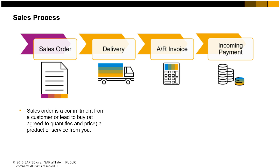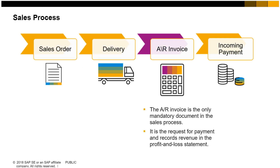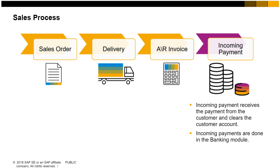The sales order is a commitment from a customer or lead to buy at agreed-to quantities and price, a product or service from you. The delivery indicates that the shipment of goods has occurred. The AR invoice is the only document that must be created in the sales process — it is the request for payment and records the revenue in the profit and loss statement. The incoming payment receives the payment from the customer and clears the customer account.